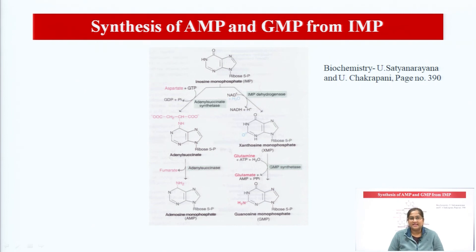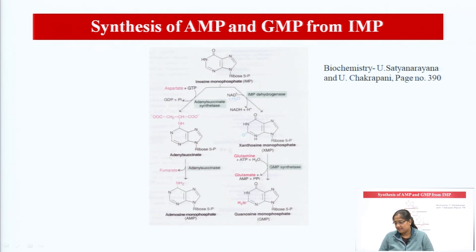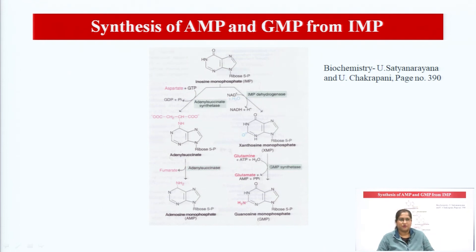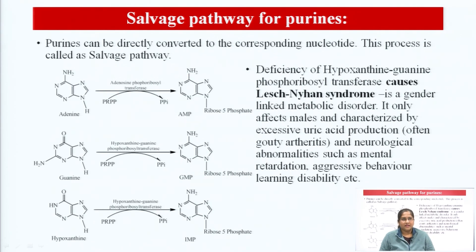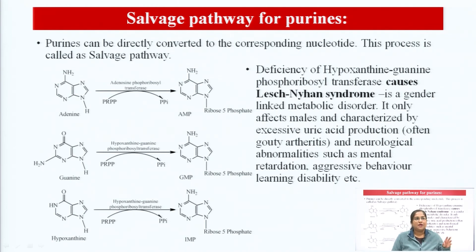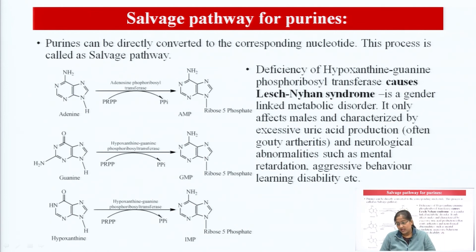From inosine monophosphate (IMP), we can synthesize AMP (adenosine monophosphate), GMP (guanosine monophosphate), and IMP. This is the salvage pathway — meaning purines that we already have can be directly converted to the corresponding nucleotide. We have adenine and can make AMP; we have guanine and can make GMP; we have hypoxanthine and can make inosine monophosphate.